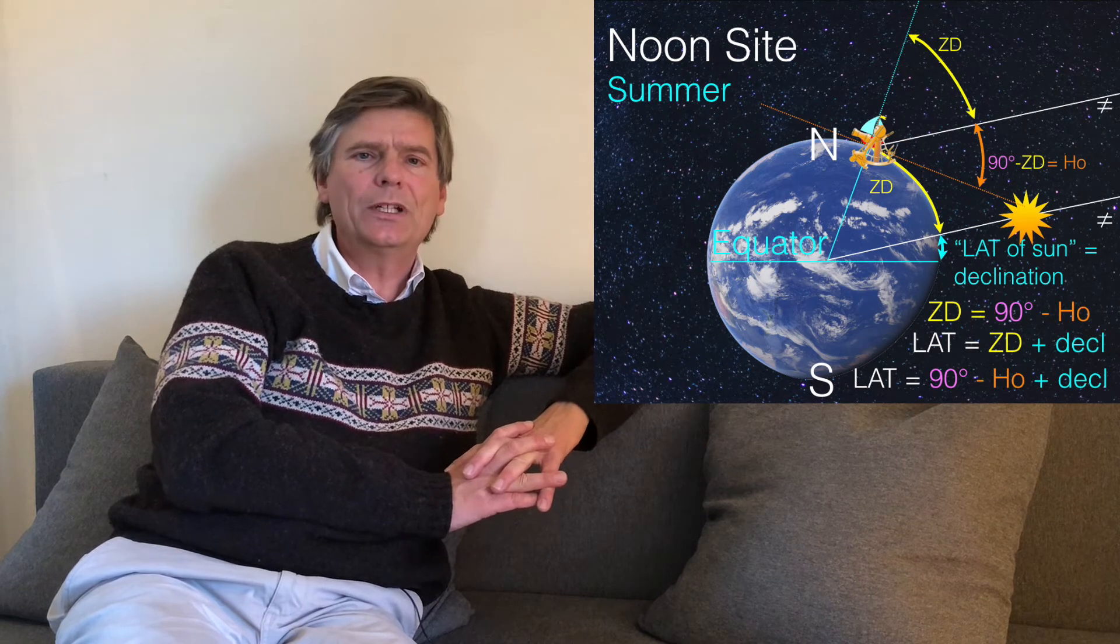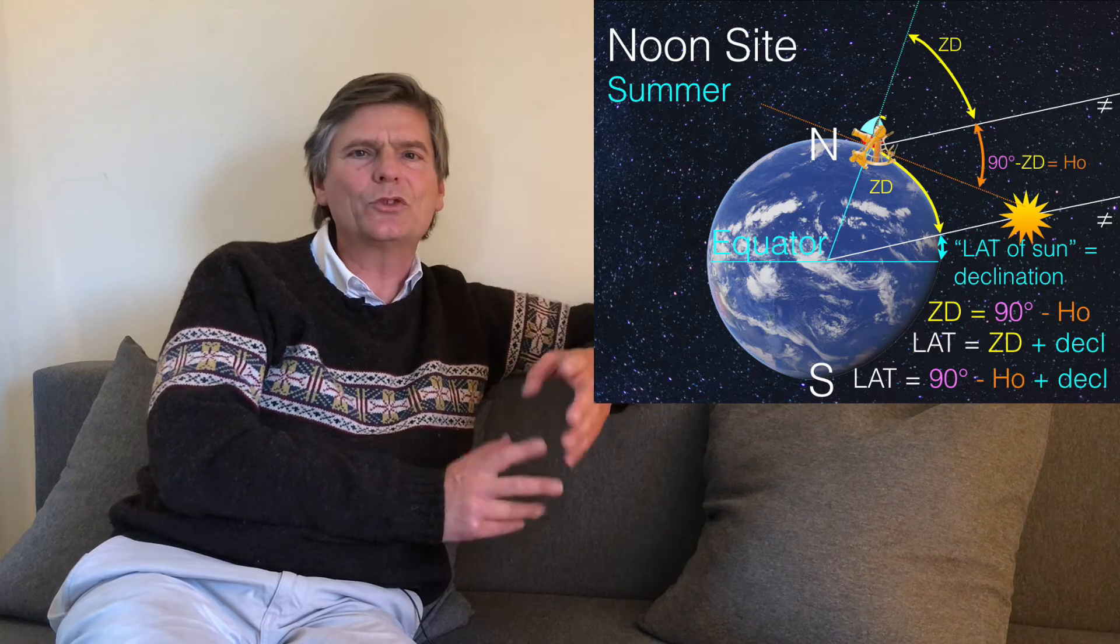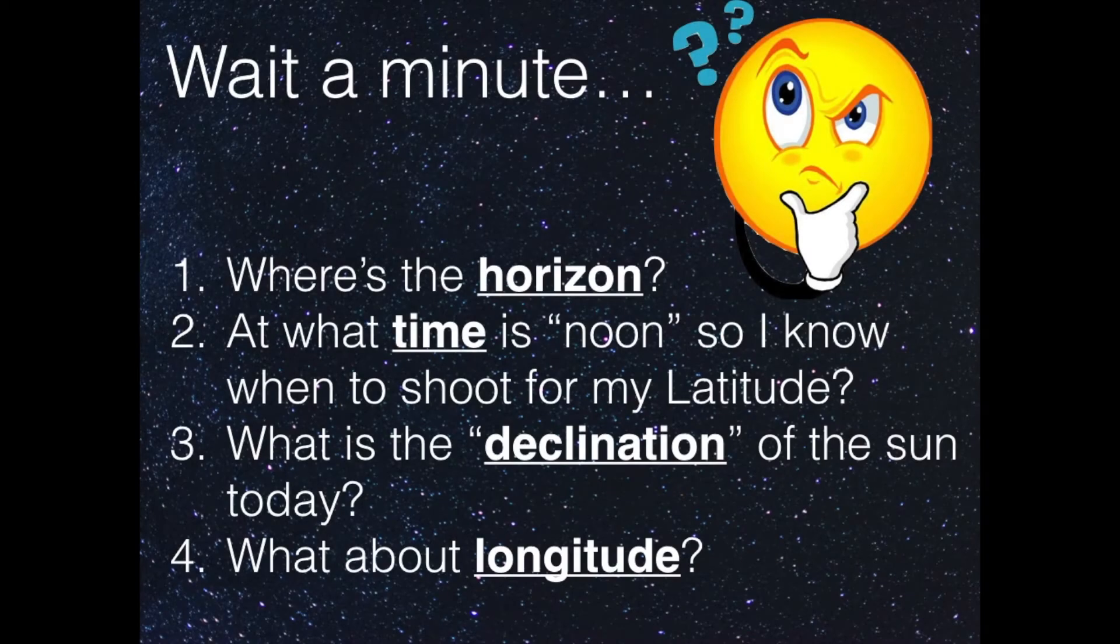All we have to do now is to understand what the declination is and find the solution. What is the declination? What is the latitude of the sun itself? First, we had this problem with the horizon, the corrections. We've done that.